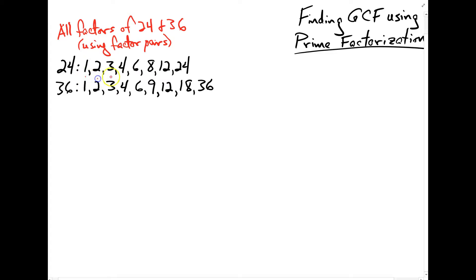The common factors are 1, 2, 3, 4, and 6. These are all factors that these numbers have in common. And the largest of the common factors is 12, so 12 is the GCF of 24 and 36.